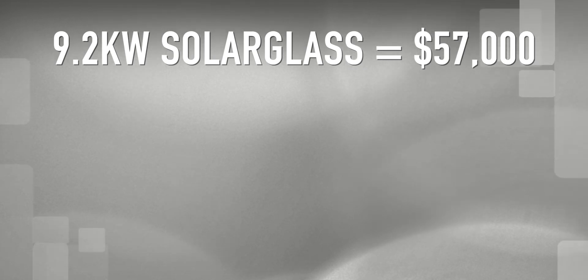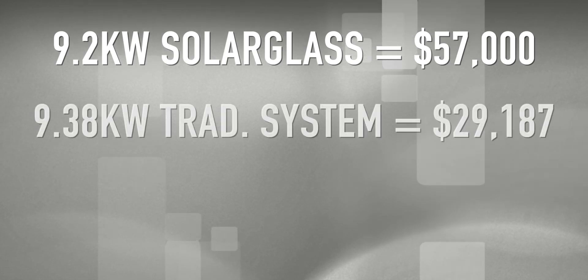I opted for 28 QCell Duo G6 Black 335. These are really aesthetically pleasing modules, high efficiency, high wattage. I paired them with a SolarEdge system, so they get SolarEdge optimizers and a SolarEdge inverter. A solar size of 9.38 kilowatts, so it's a little bit larger, but that's okay. Your estimated cost before a new roof just for this solar system would be around $29,187. Very respectable price for this size of a system, a 9.4.